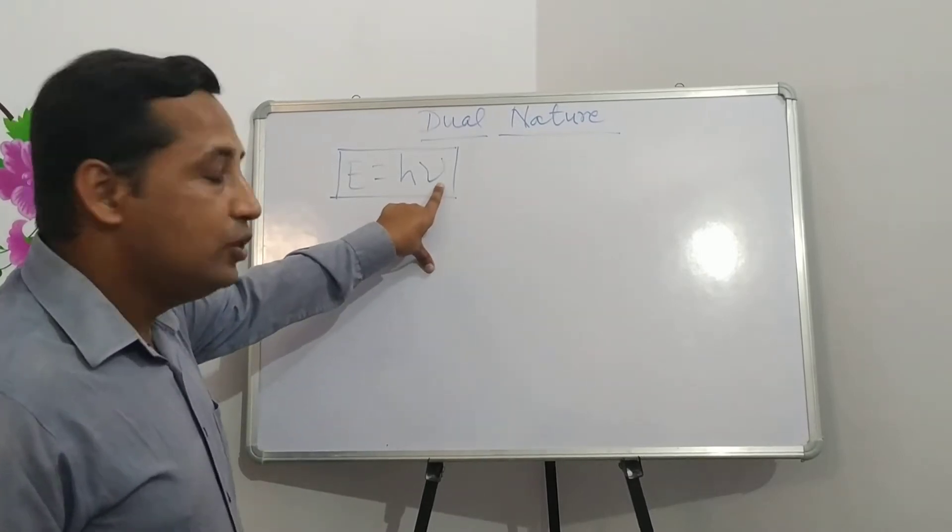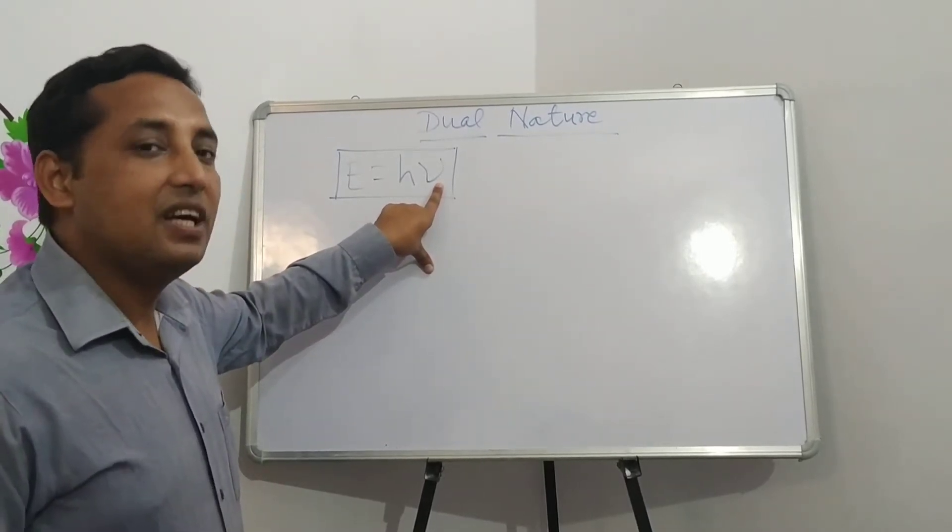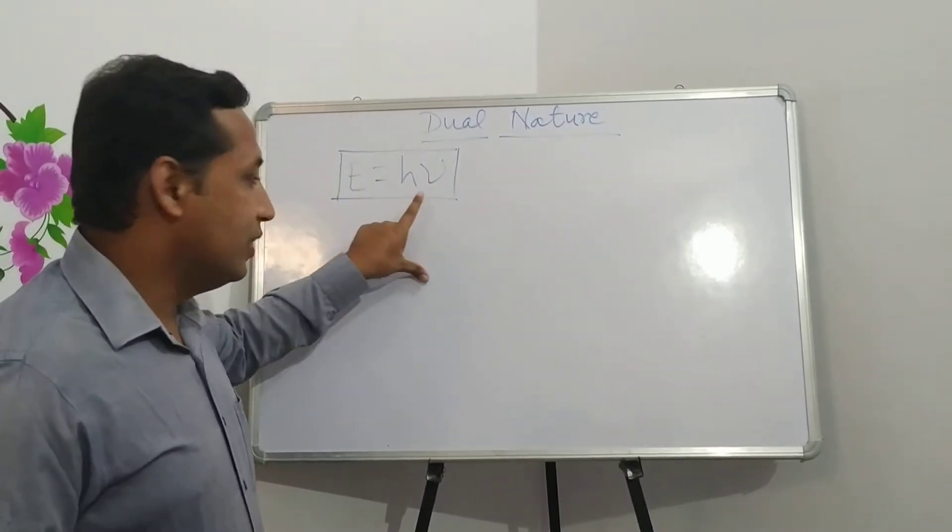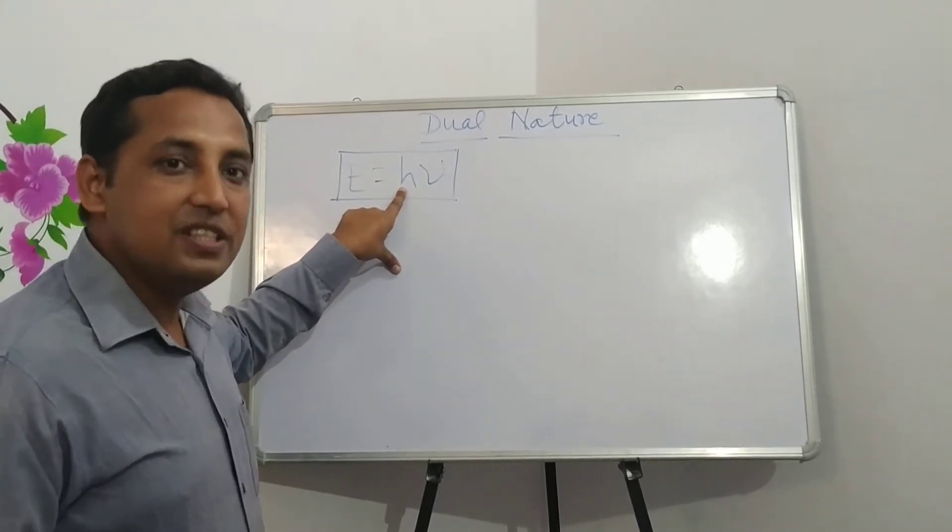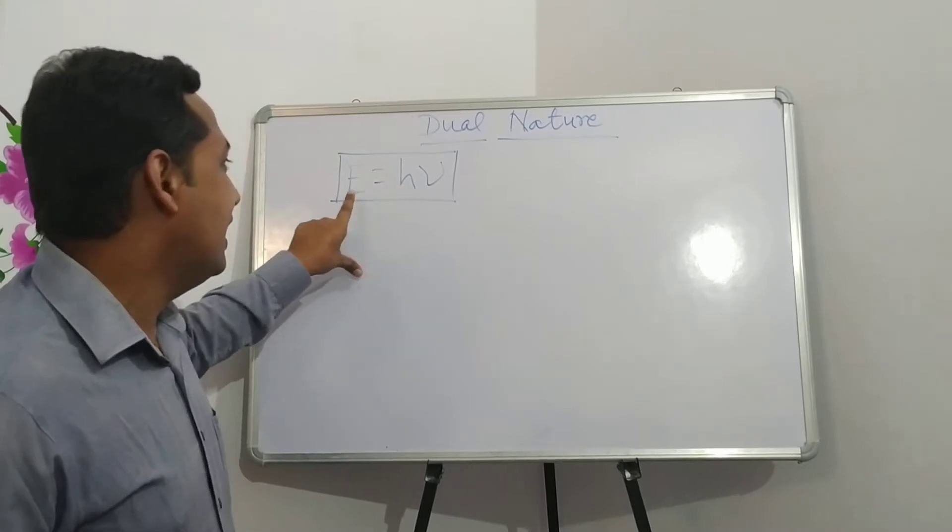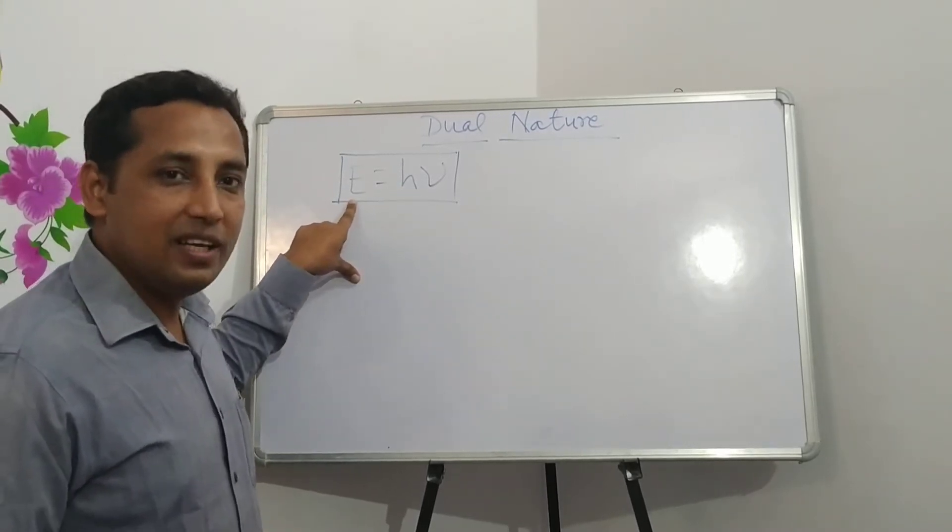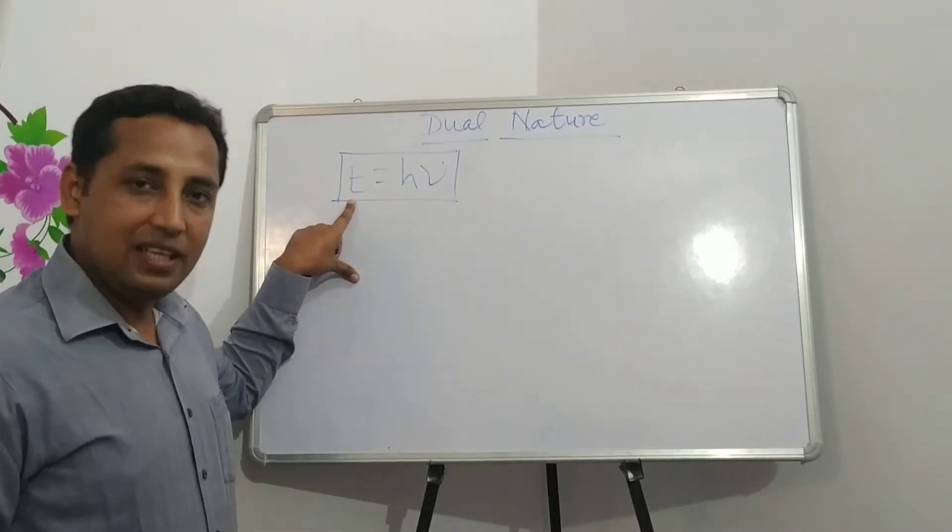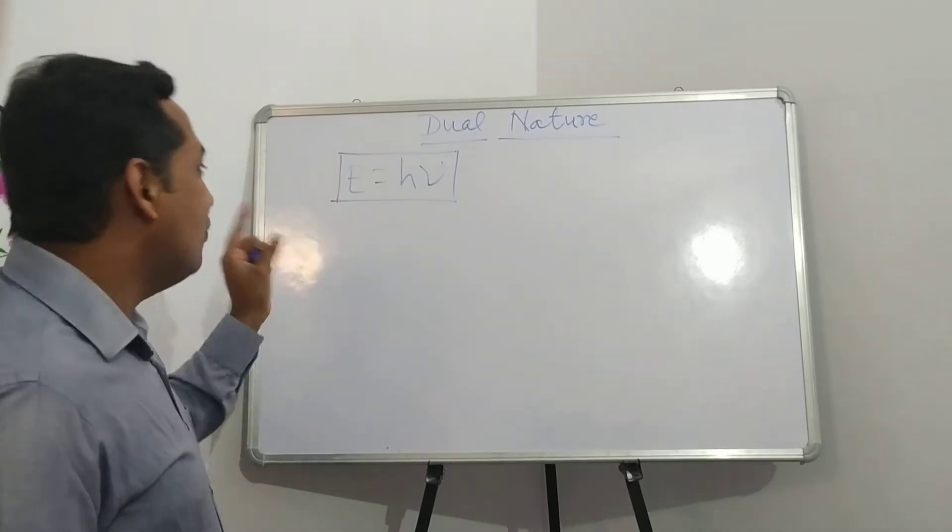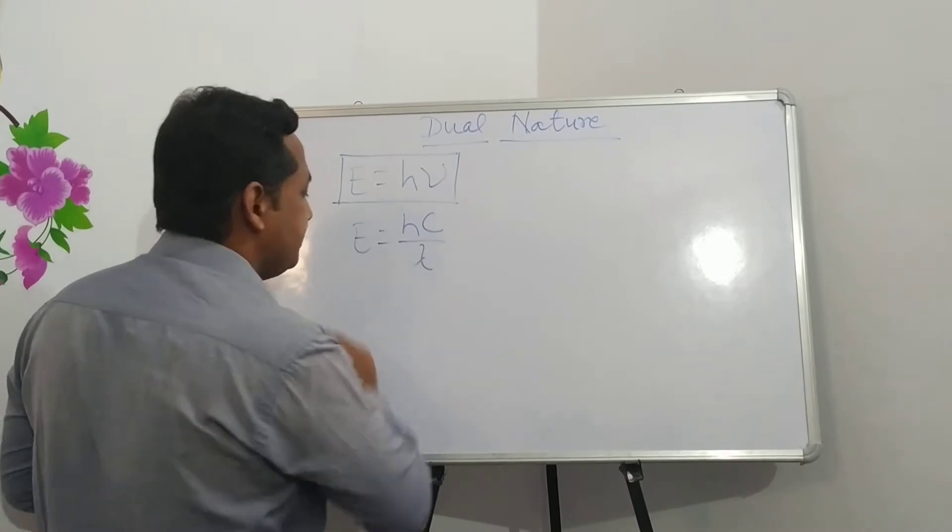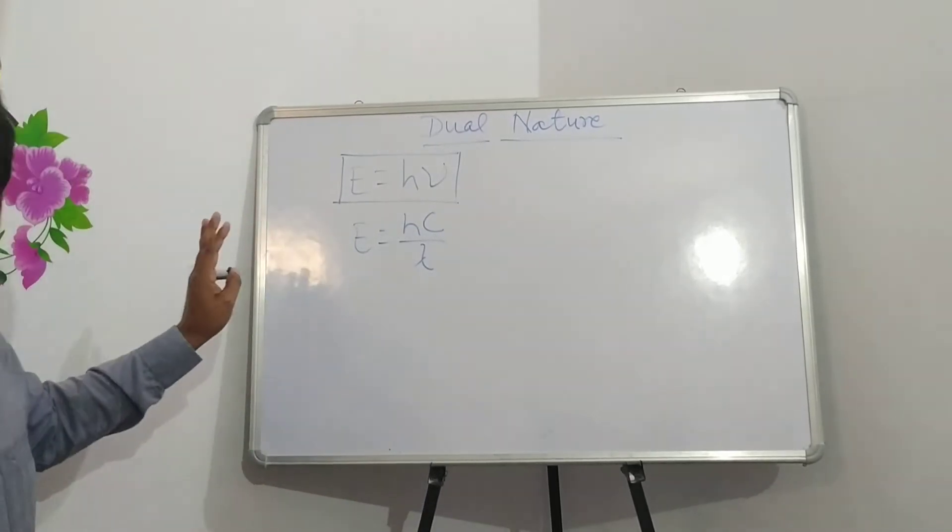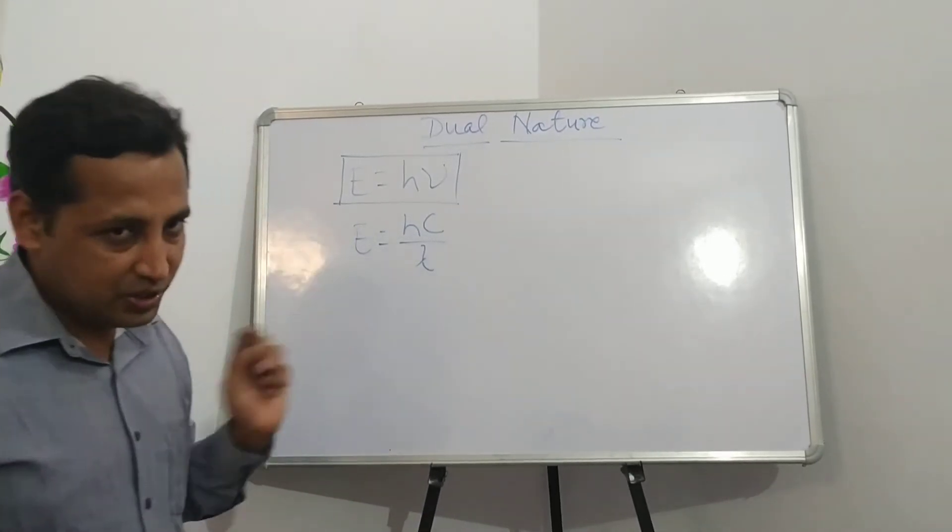ν represents the frequency of electron. Whereas H is known as Planck's constant and E is the total energy associated with electron. We can convert this formula like this: E is equal to hc upon λ. H is Planck's constant.